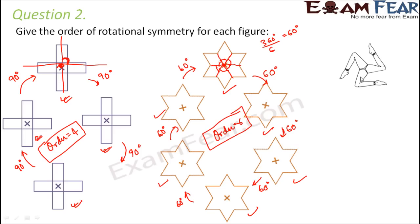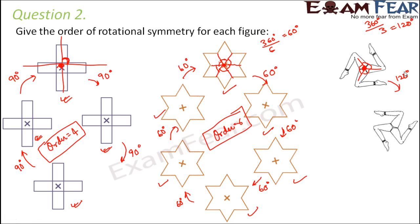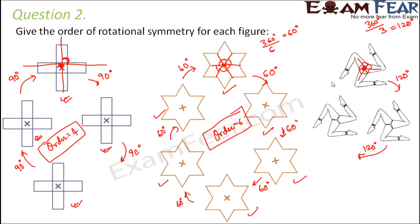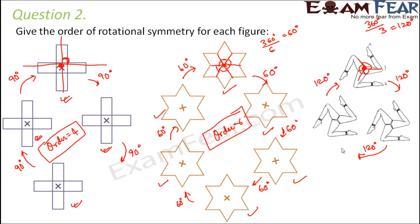For the third image, the center of rotation is at a central point. There are three parts — one, two, and three. The angle at the center is 360 divided by 3, which equals 120 degrees. Rotating clockwise by 120 degrees gives one position; further rotation by 120 degrees gives another; and a final 120 degrees returns to the original. In one complete rotation we get three identical images. Therefore, the order of symmetry is three.